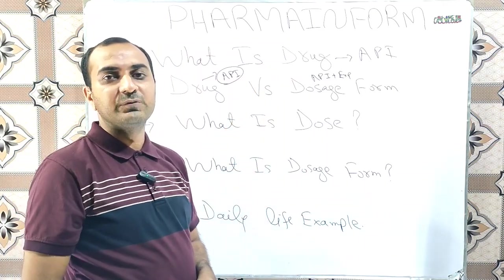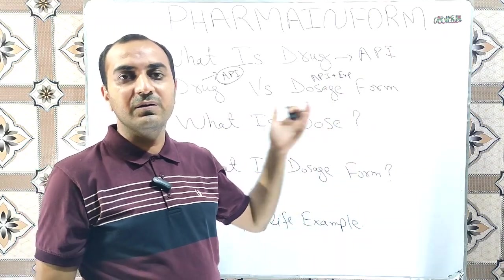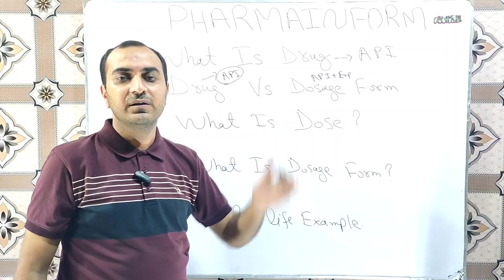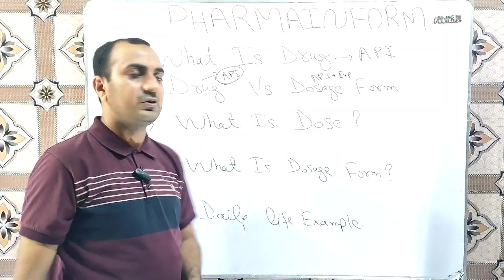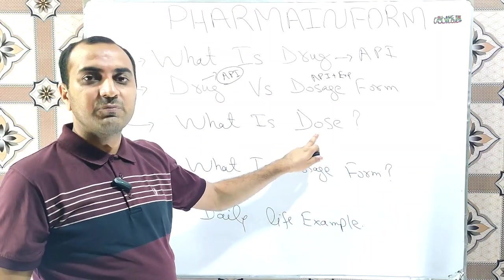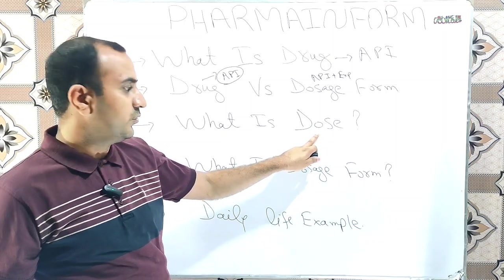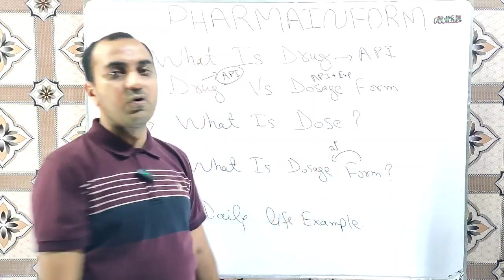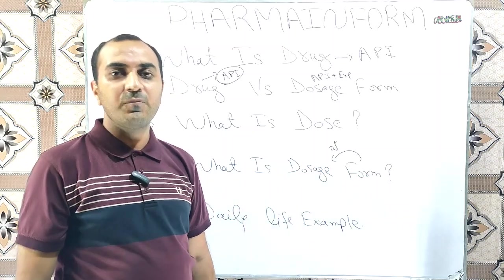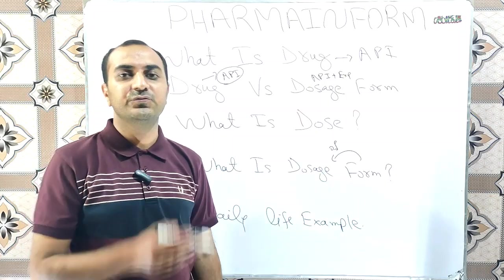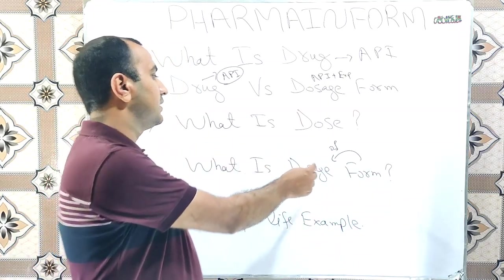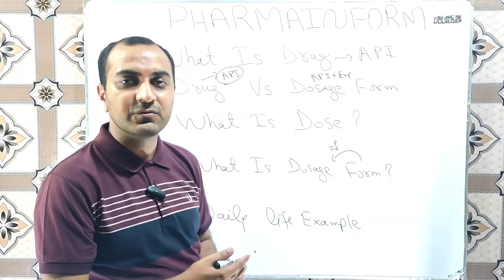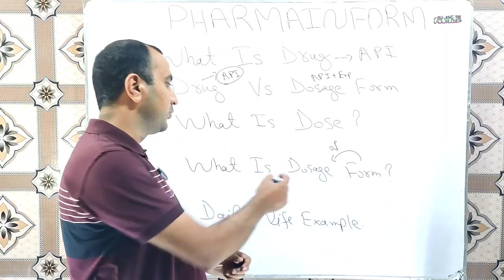These are some basic points, and from these basic points we will build our strong base. If you understand the basic concept, it will be easier to build the main concept. What is dosage form? If you are now familiar with dose — meaning the quantity of drug is known as dose — the dosage form means the form of a dose.